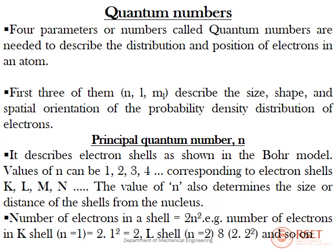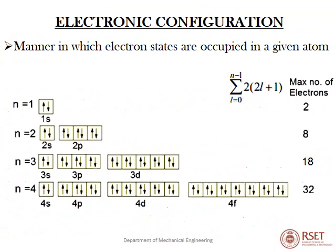The number of electrons in a shell is given by 2n². For the first shell: 2×1² = 2; for the second shell (L, n=2): 2×2² = 8, and so on. Electronic configuration describes the manner in which electron states are occupied in a given atom. The maximum electrons per shell are 2, 8, 18, 32. Electrons can also be arranged in s, p, d, f sub-shells, showing how electrons are oriented and configured for a stable arrangement.